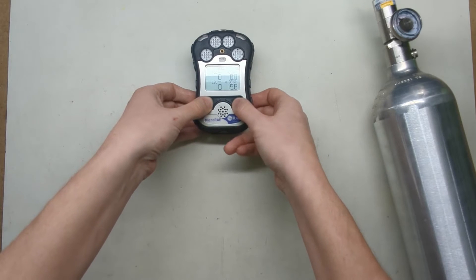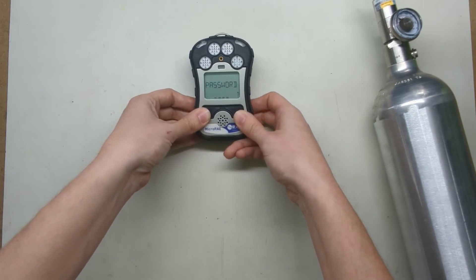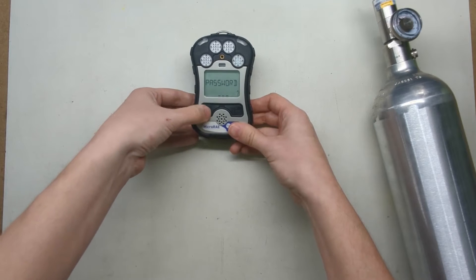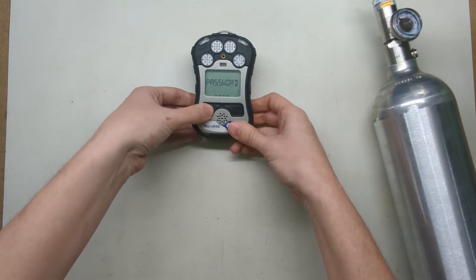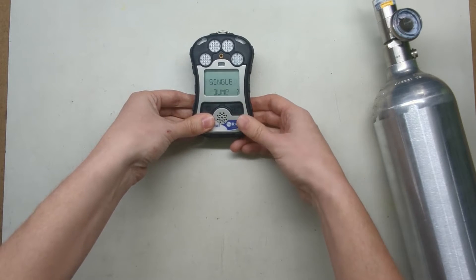Press and hold both buttons. It's going to ask you for the password. Just press the power button all the way over until you get to the question mark. Once you're there, press the right enter button, the yes button.